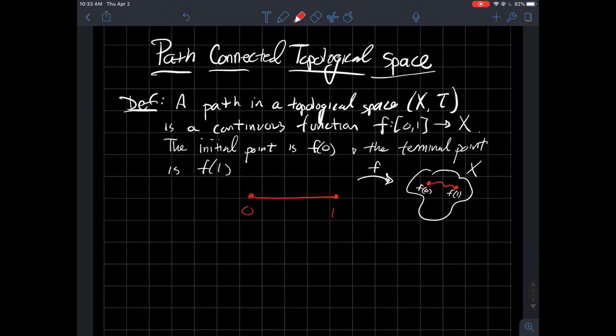And so maybe one more thing. When it says in a topological space, notice this path is completely contained inside the space X. It's not going out of X like that path is. So it's got to be completely contained inside of it.